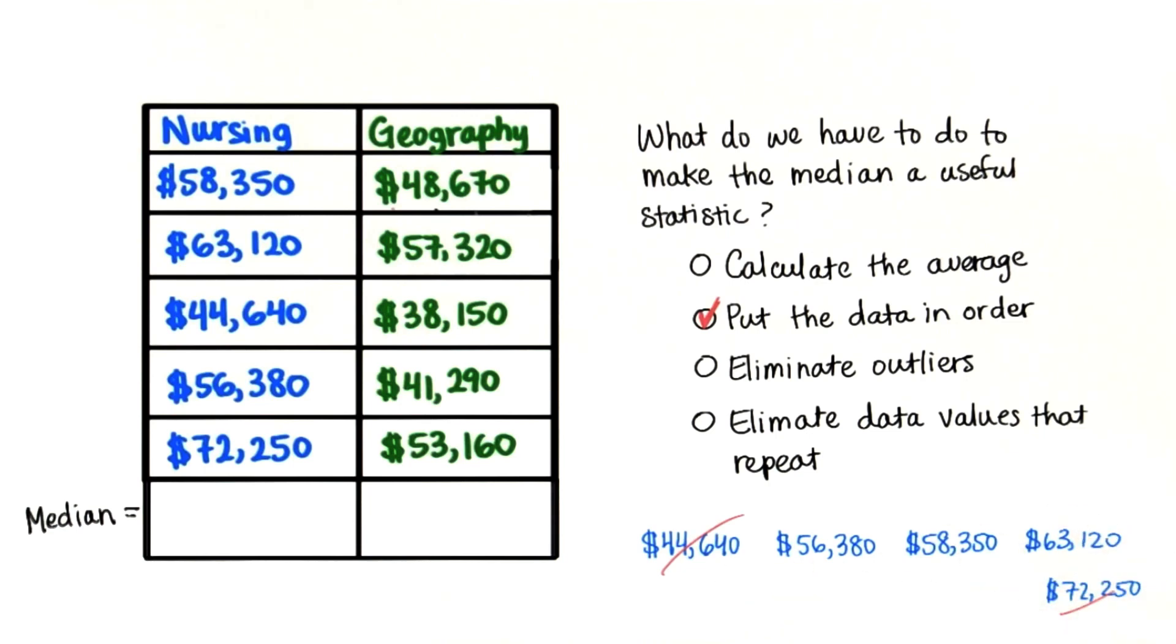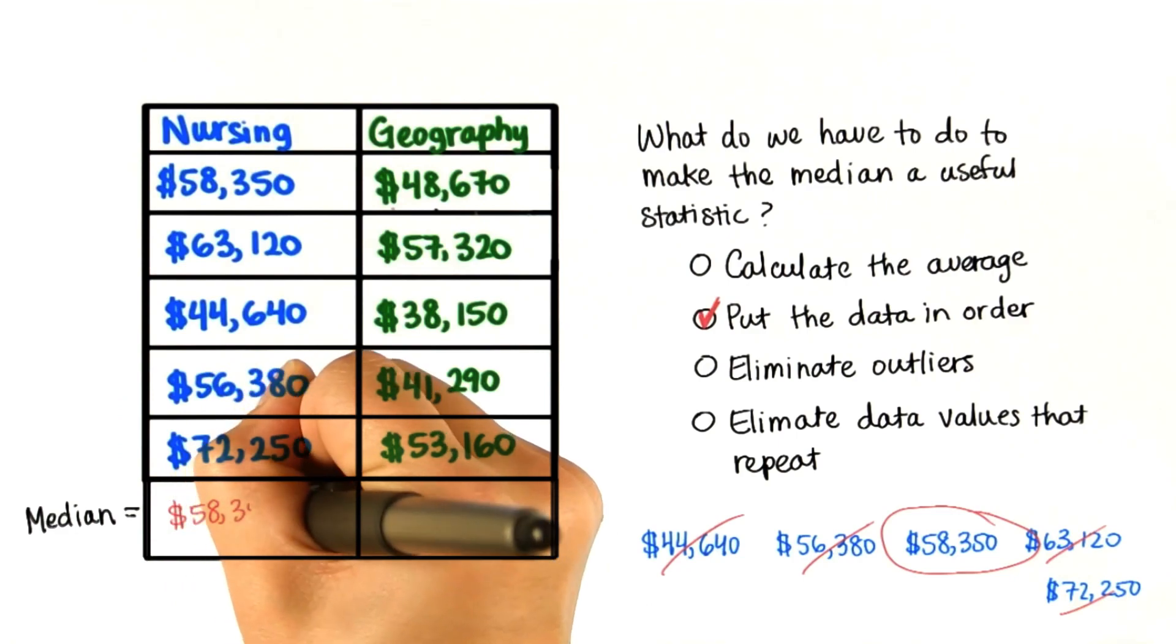So let's cross off the first and last, and again the second to first and second to last, and we're left with this one in the middle. So this is the median, $58,350.